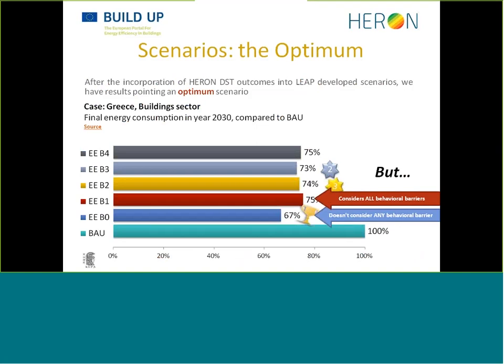But wait — because we know that EEB0 got these results because it doesn't consider any barrier. And we know that the scenario with the worst results, EEB1, is considering all the barriers without tackling any of them. When it comes to reporting official situations and suggestions, we need to present tables, results, and numbers that look credible. The reader first looks at the graph and then maybe reads the paragraph. So we need plain numbers that can stand without any caveats.